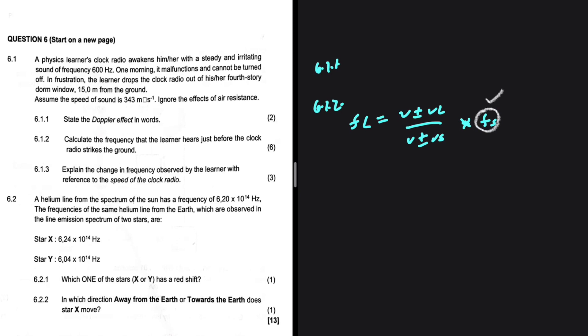And then V, the speed of sound in air, is given to us: 343 m/s. The velocity of the listener - the listener is stationary. The listener is in her room, so we have that it equals zero. I think what we need is the velocity of the source.